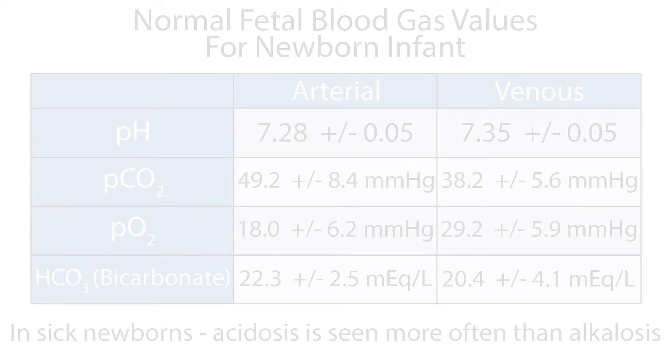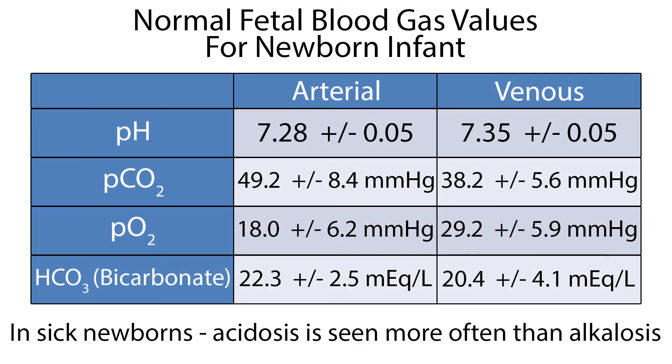Many studies have been done on healthy term infants to determine a normal reference range for newborn blood gases. However, the exact values accepted as normal vary in literature and in various facilities. One study example of umbilical cord blood gas values following uncomplicated term vaginal deliveries are shown on the chart.